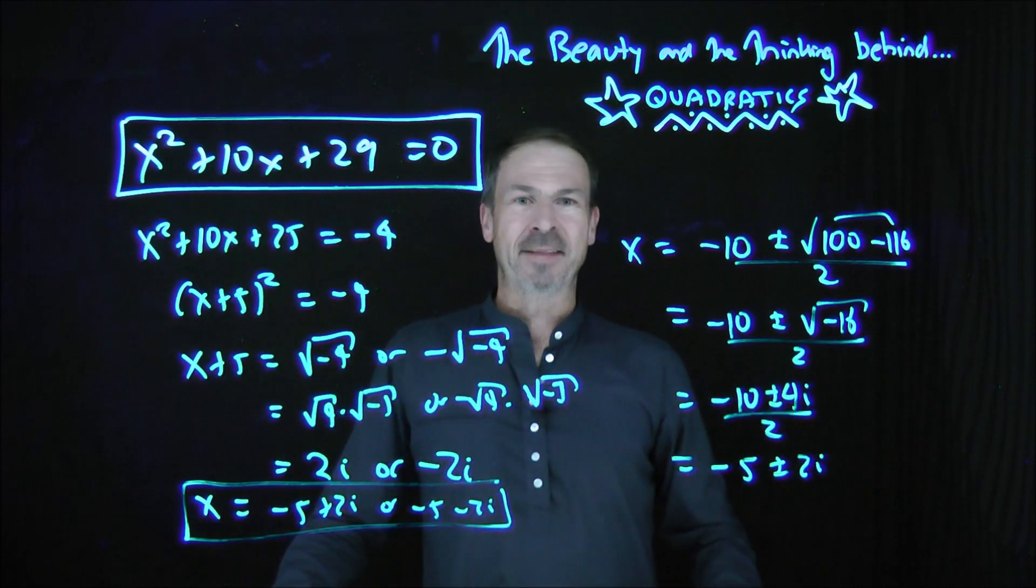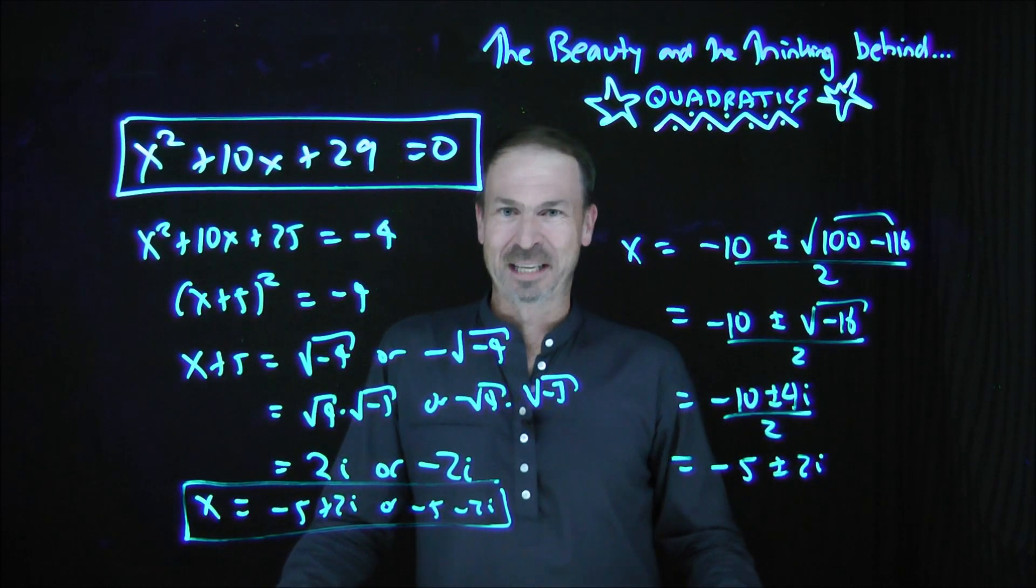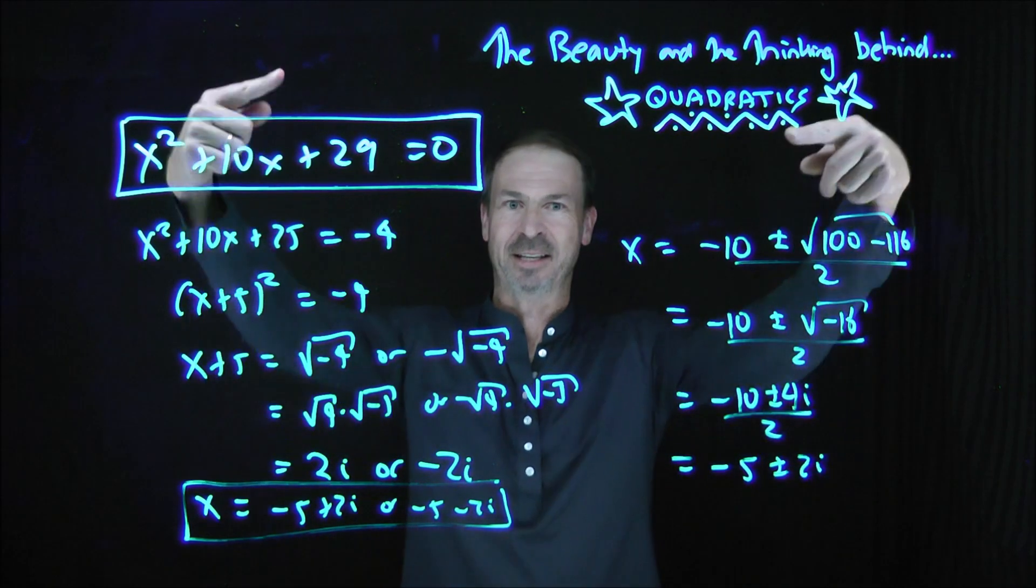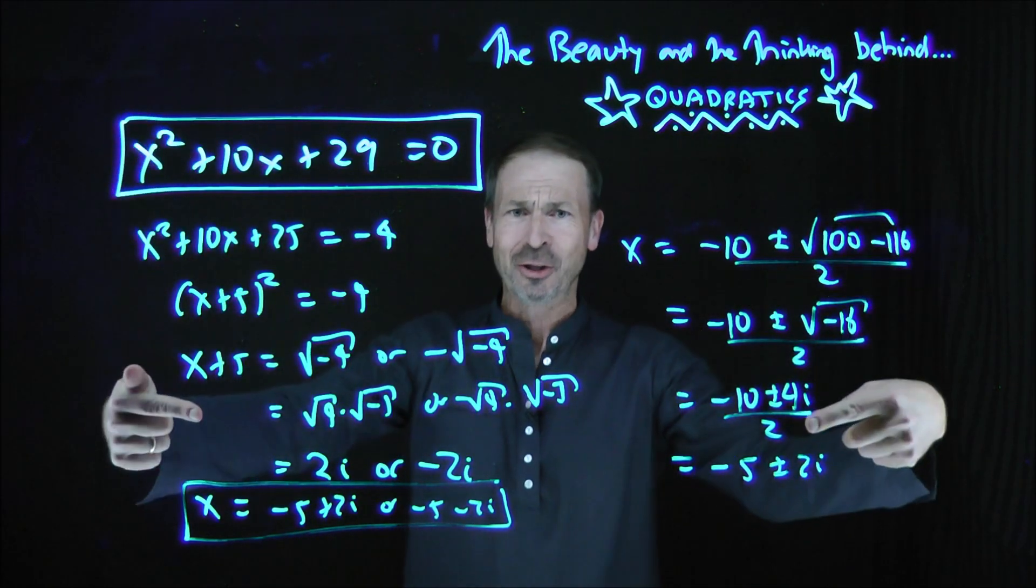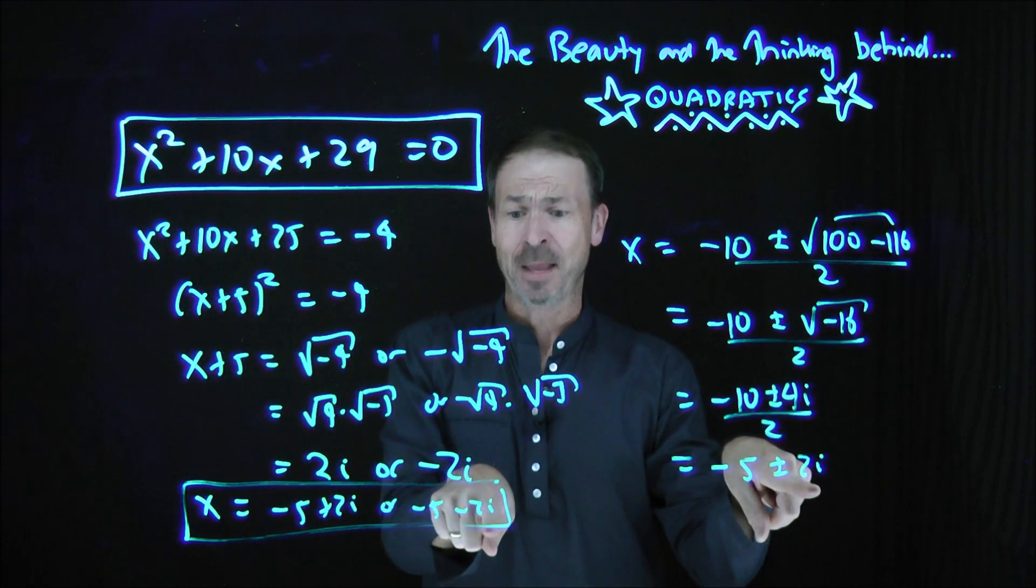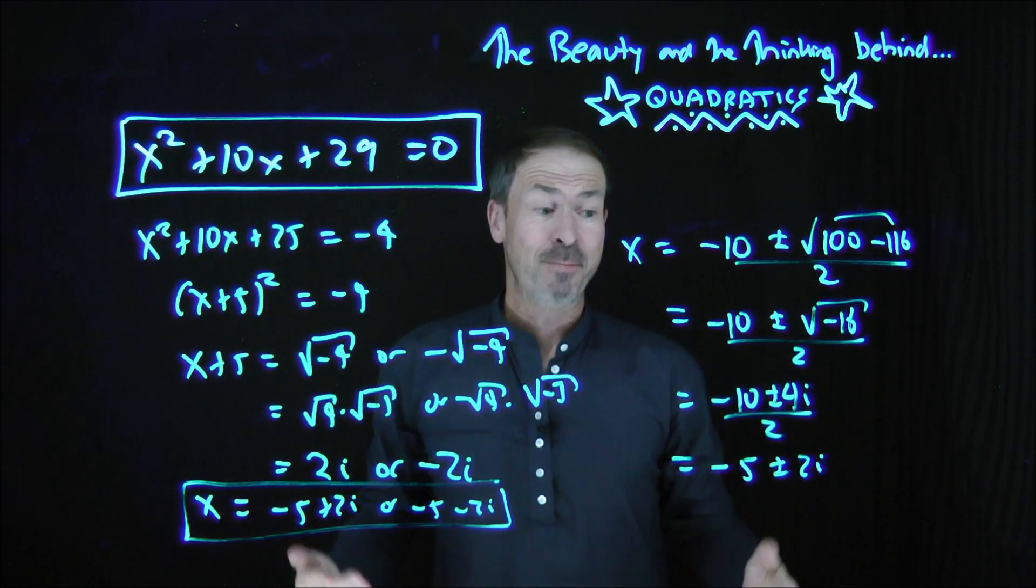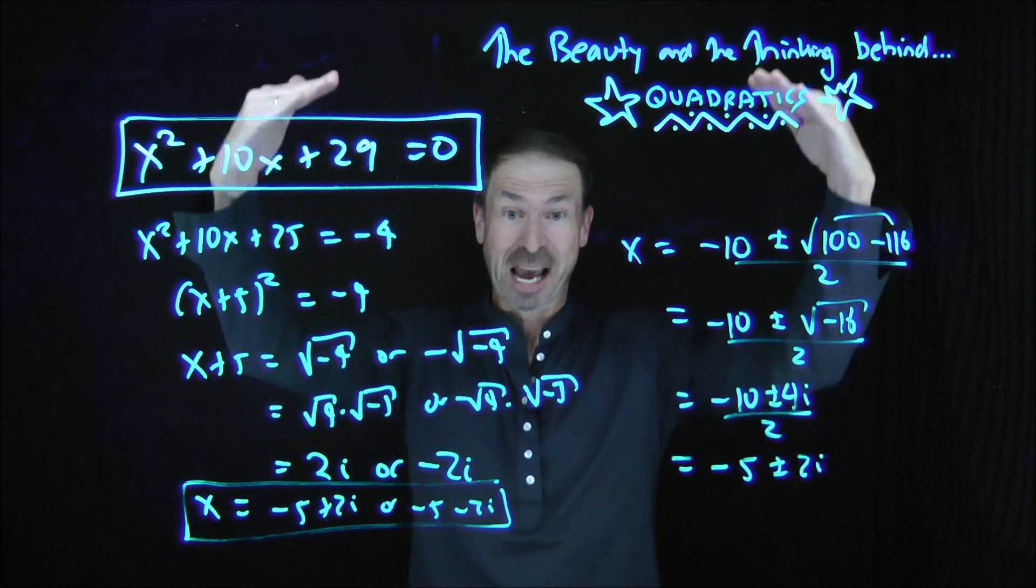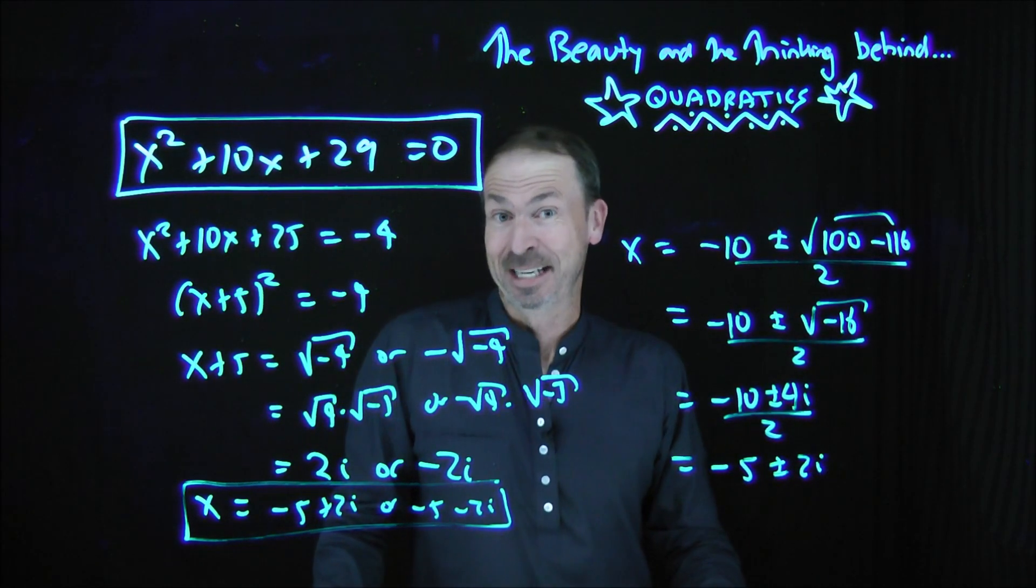So just be aware that sometimes a textbook or an exam or curriculum might want you to write your answers. Even the ones that we'd say no solution actually do have a solution if you go all the way up to this funny thing called i. Imagine there is a square root of -1 because in the world of complex numbers, every quadratic equation can indeed be solved.